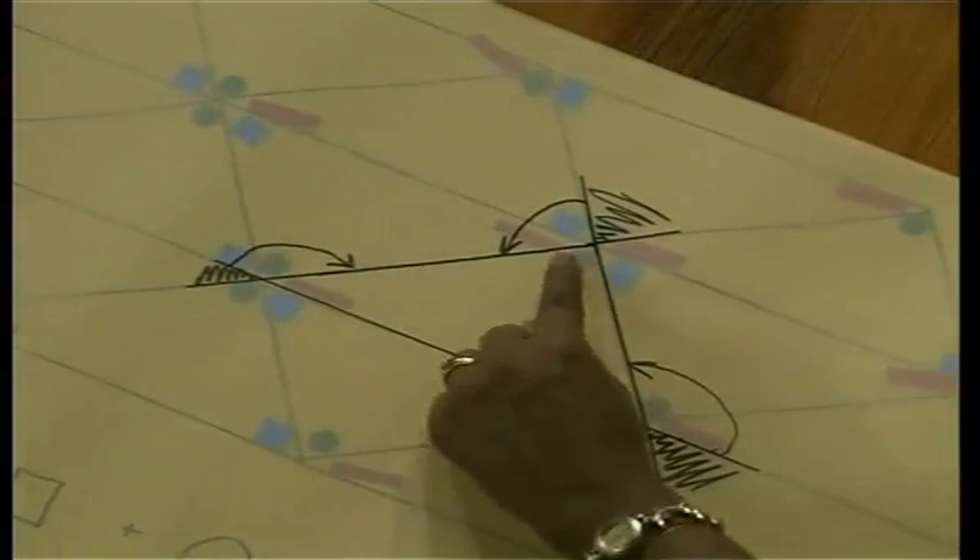So we see that the sum of the interior opposite angle, which is the square plus the circle, is equal to the exterior angle, the square plus the circle. Yes.